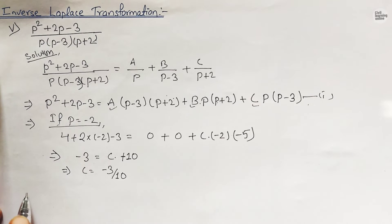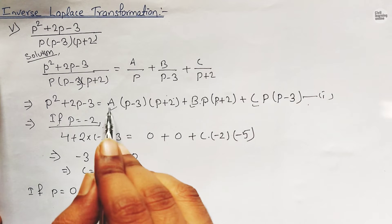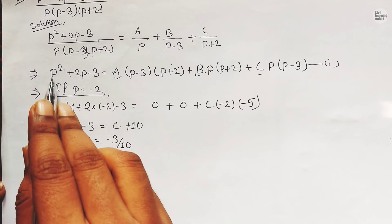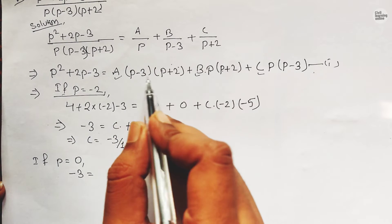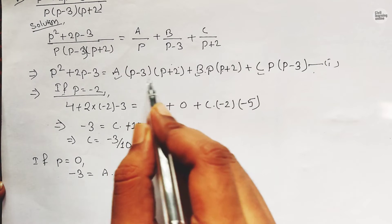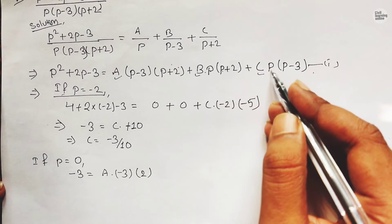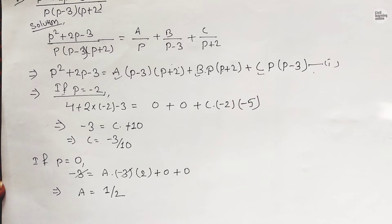To find A, we take p = 0. Substituting into the equation: 0 + 0 - 3 = A(-3)(2) + 0 + 0, giving -3 = -6A. Therefore A = 1/2.